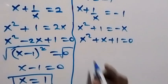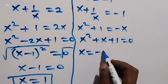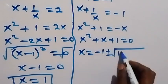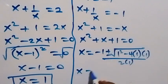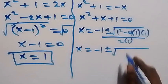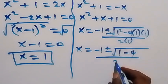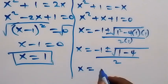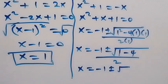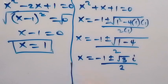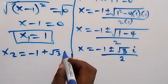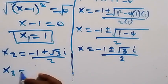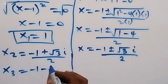Using the quadratic formula: x equals minus b, where b is 1, so minus 1, plus or minus square root of b squared minus 4ac, that is 1 squared minus 4 times 1 times 1, all over 2 times 1. This gives x equals minus 1 plus or minus square root of 1 minus 4, which is minus 3, so square root of minus 3 equals root 3 times i, all over 2. The two complex solutions are x₂ equals minus 1 plus root 3 i over 2, and x₃ equals minus 1 minus root 3 i over 2.